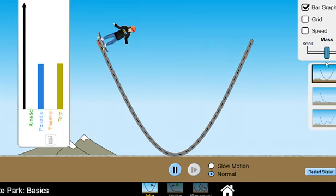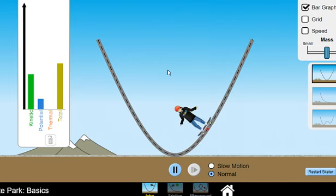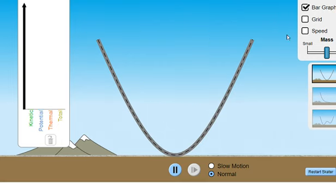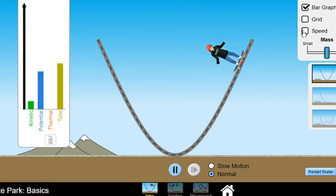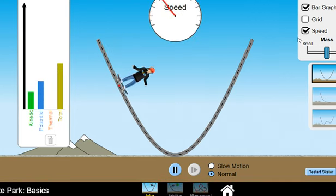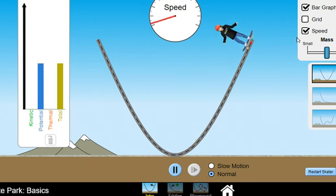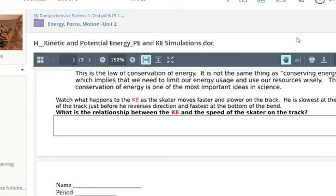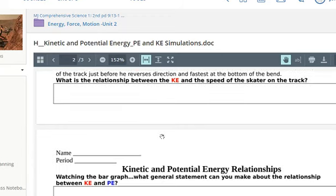Can I push speedometer? That sounds like a cool thing to push. Yep, looks like he's going the fastest at the very bottom of the track and the slowest at the very top of the track. So, what's the relationship between KE and the speed of the skater on the track? I'm going to write that in. What's the relationship between kinetic energy and the speed of the skater?